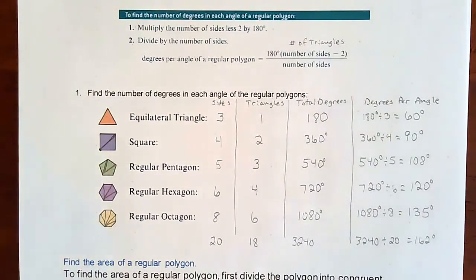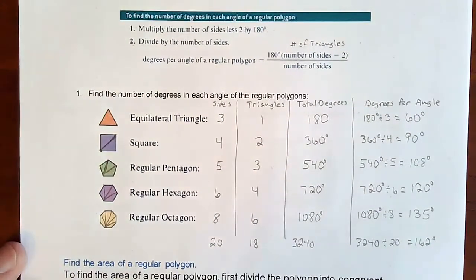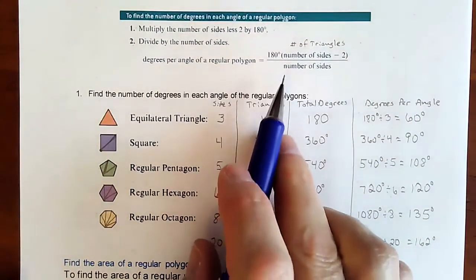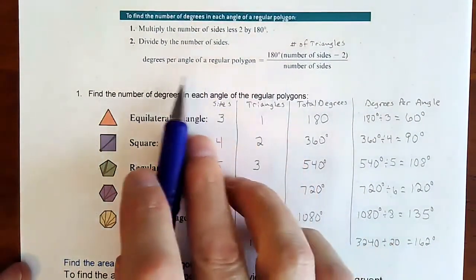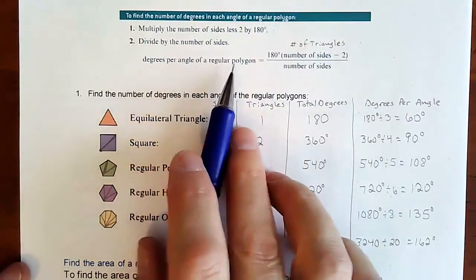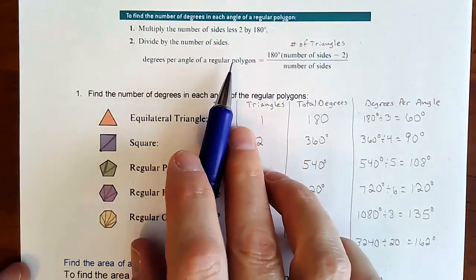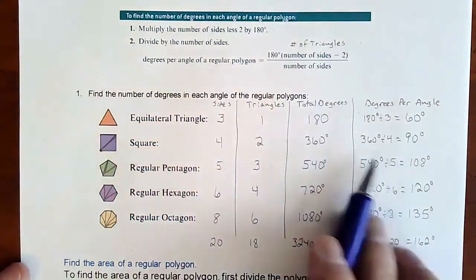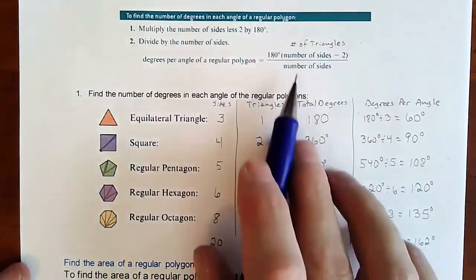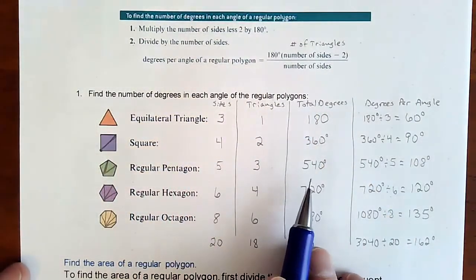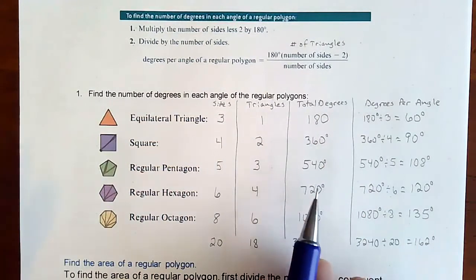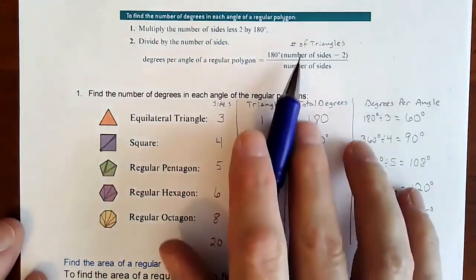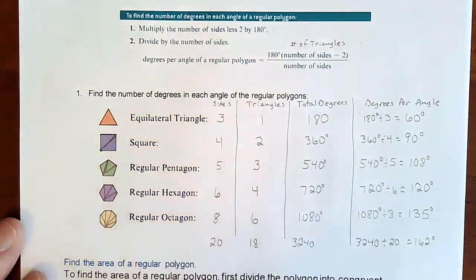That is how you figure out the number of degrees per angle in a regular polygon, walking through and showing how this formula comes about.